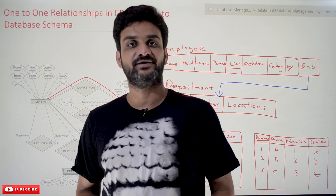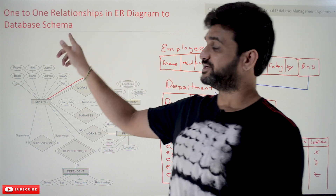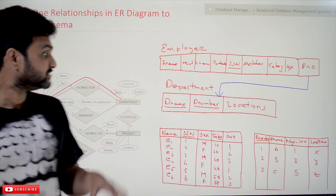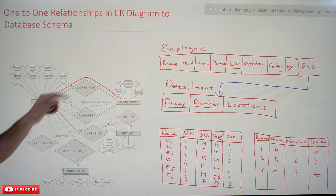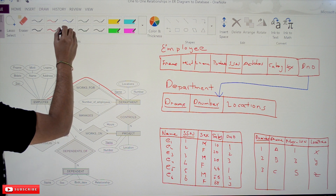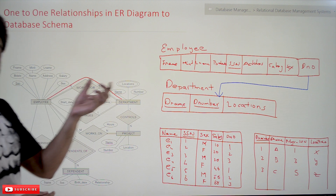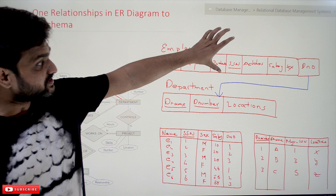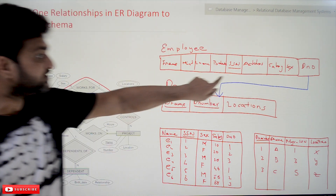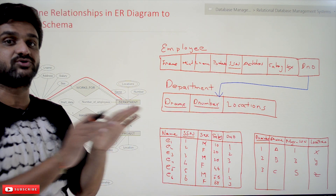Welcome to Learning Monkey. I am Vikram. In this class we try to understand one-to-one relationships in ER diagram to database schema — the concepts of converting the relations in ER diagram. We have already converted the 'works for' relationship in our previous videos, and we have implemented the employee table and department table as the database schema, including the referential integrity relationship.